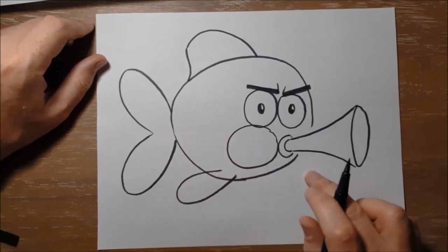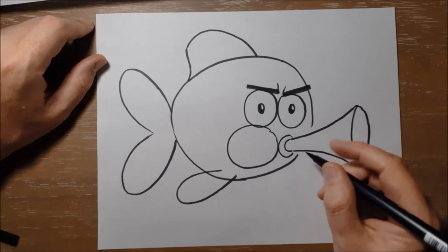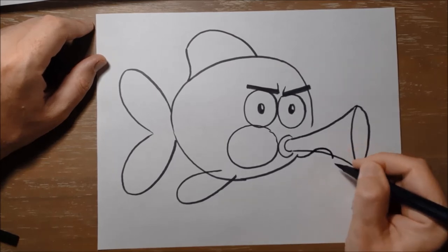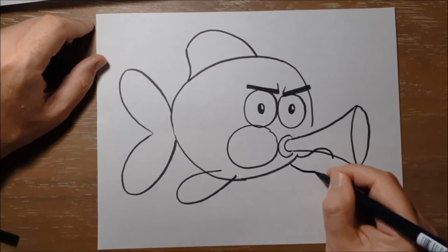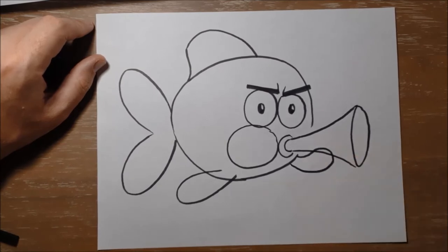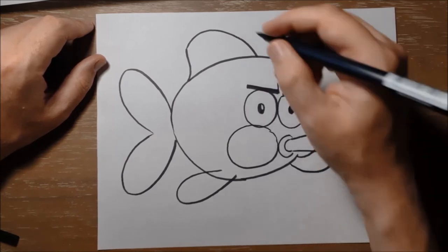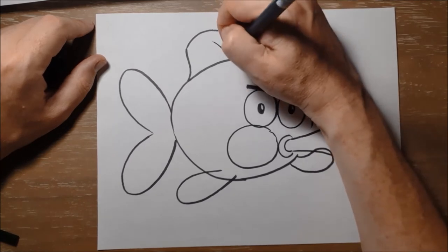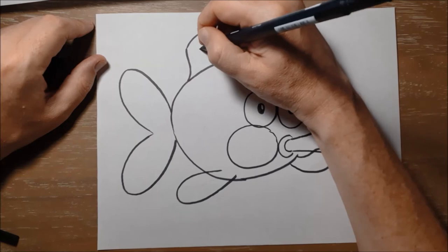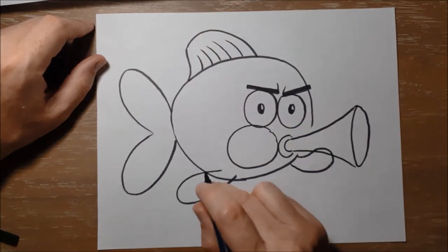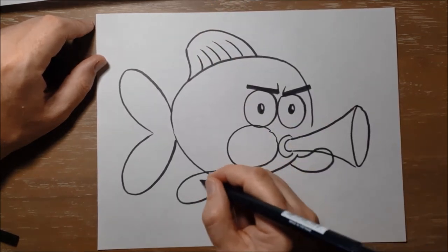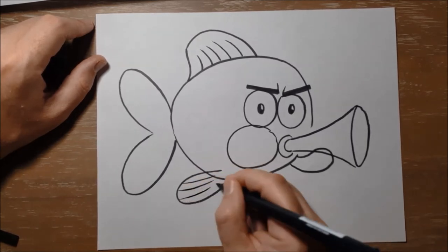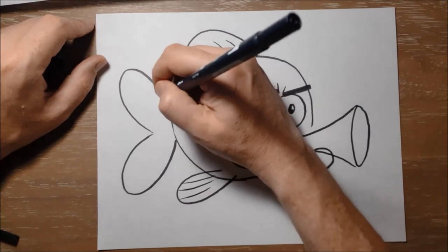The fish has one more fin holding the horn. Make a curving line, like this. The fish has some lines on its fins, like this, and on its side fin, and on its tail fin.